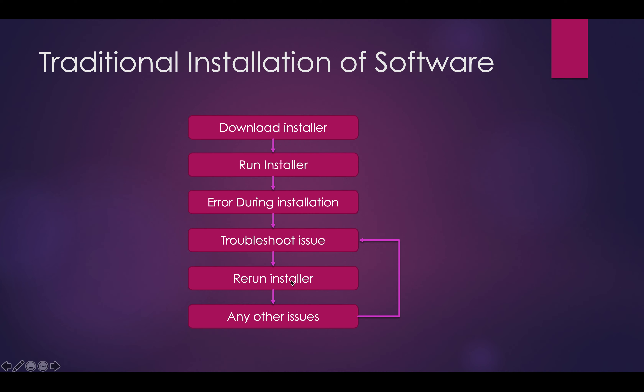Then you can reinstall the installer and re-run. If you have any issues, you can troubleshoot it and re-run. If you look at the flow, you can get the issue results. So we will install the software — in this next step we will install the software.